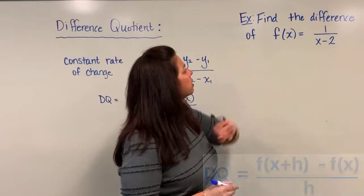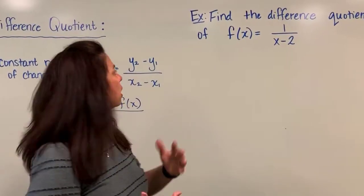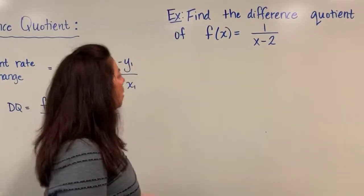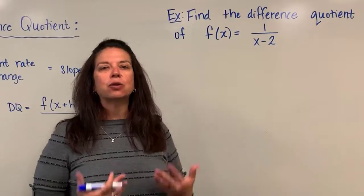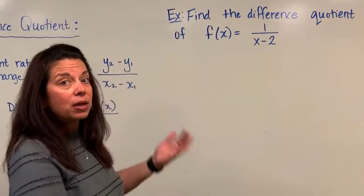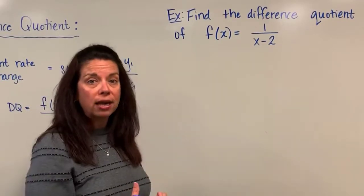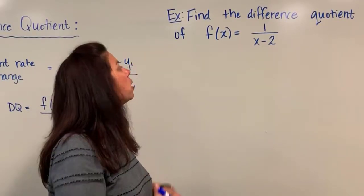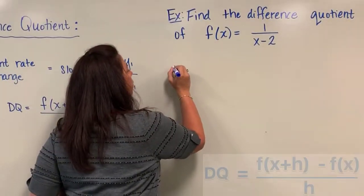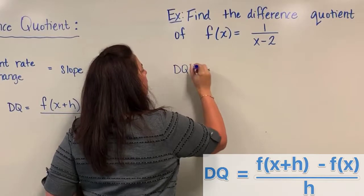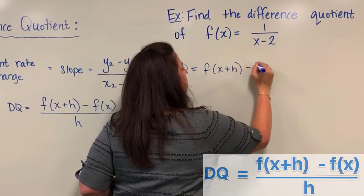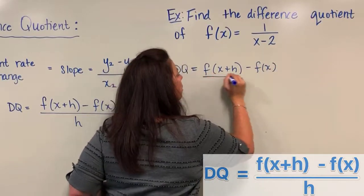So let's jump to our example here. We're going to find the difference quotient of this function f of x equals 1 divided by x minus 2. What's complicated about this function is that it's a rational function — it's a fraction. But the same process that we used with linear functions in the previous video and quadratic functions also in the previous video, we would still apply here to this problem. So I'm going to start out again with the difference quotient, writing my formula as f of x plus h minus f of x all divided by h.